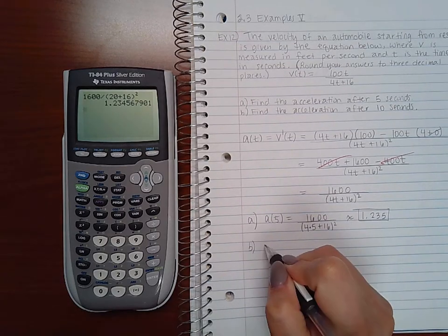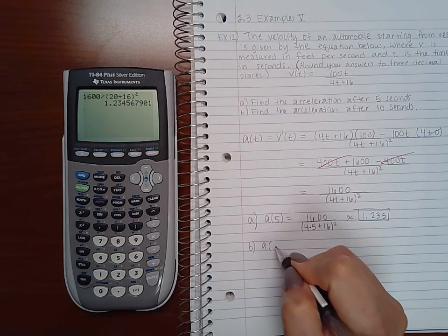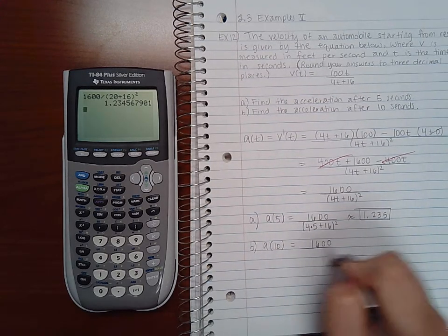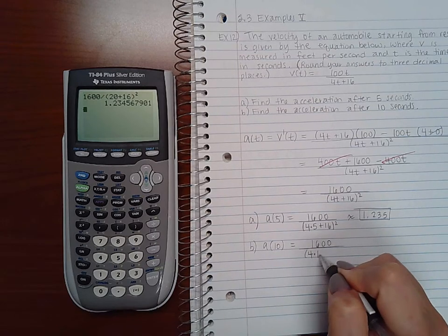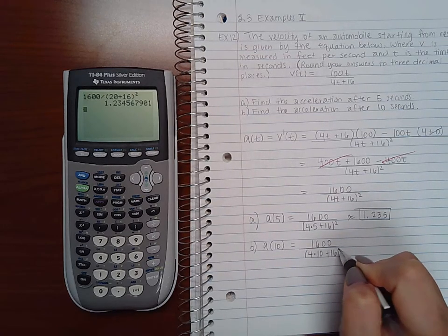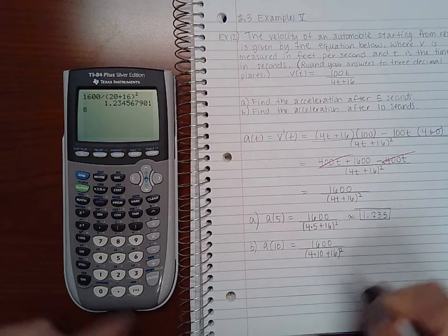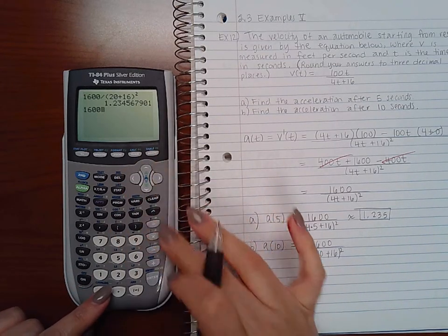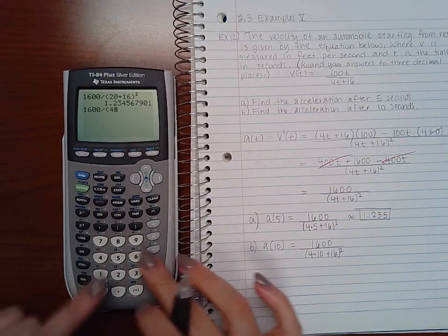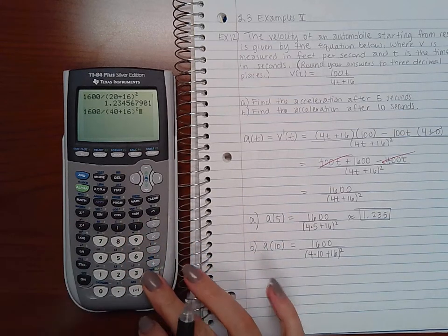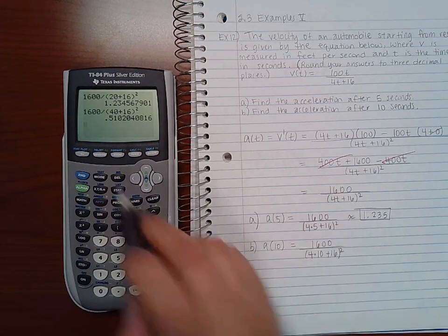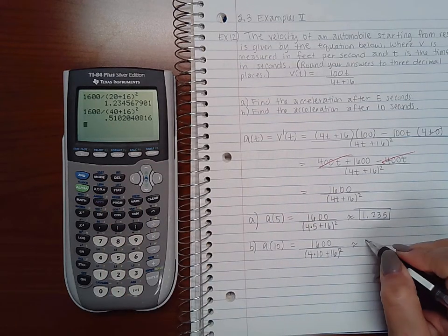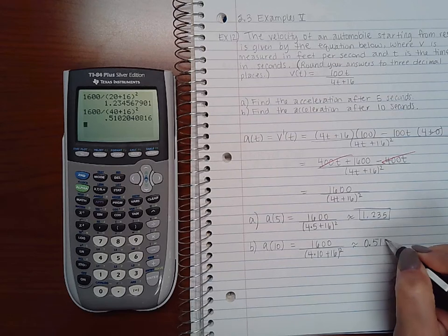For part b, I'm going to find a of 10. So now I'm going to plug in 10 everywhere I see a t in that function. So 1600 divided by 40 plus 16 squared. And three decimal places, the two will not affect the zero, so it will be 0.510.